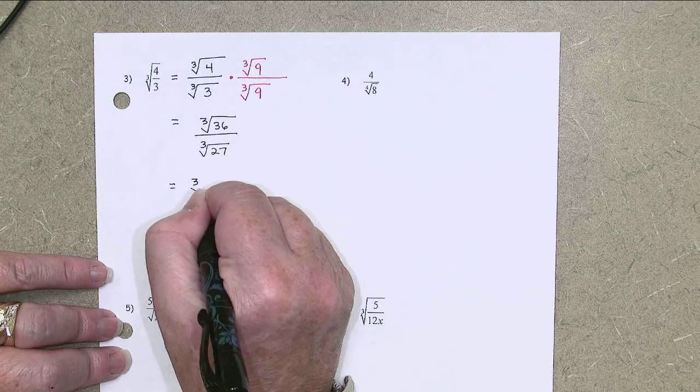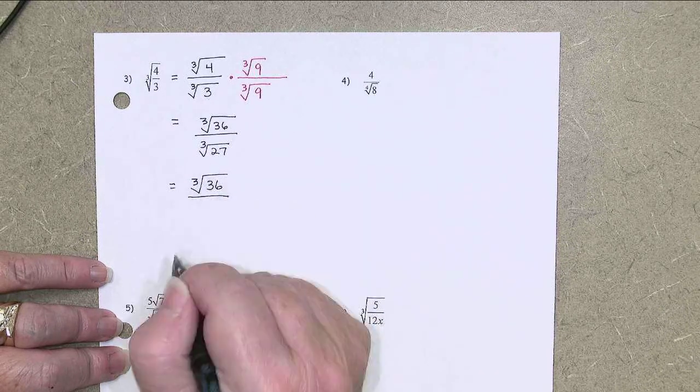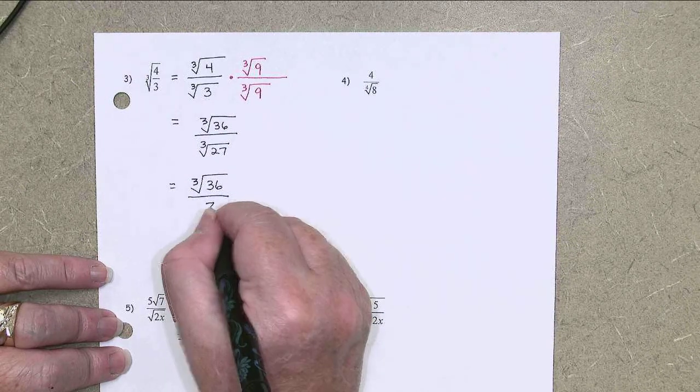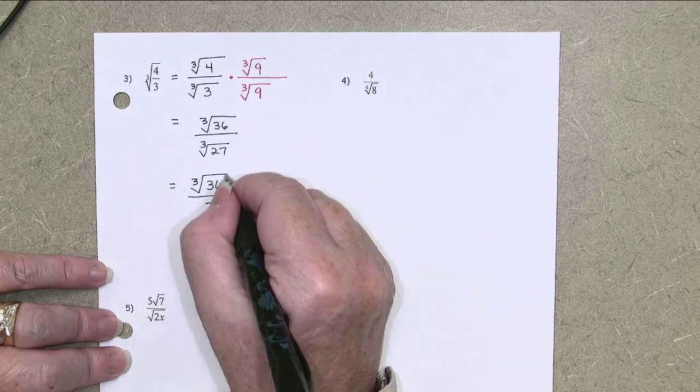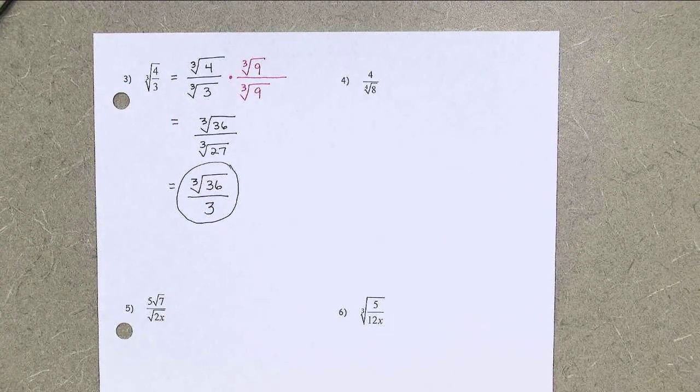The cube root of 36 doesn't come out evenly, so I'm just going to leave that the way it is. But, by design, my denominator does come out evenly. It's just 3. So I've accomplished my goal. No more radicals in the denominator.